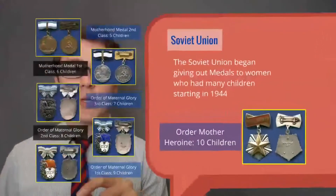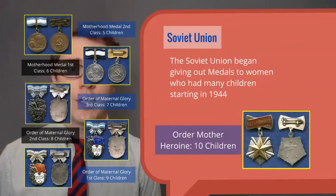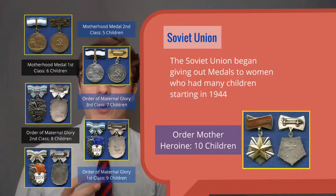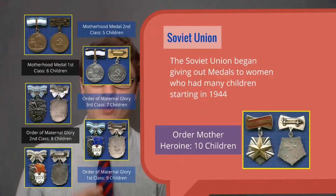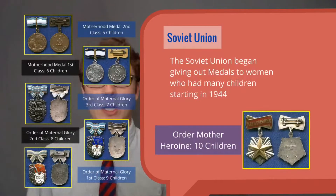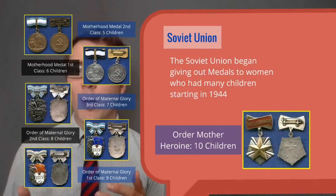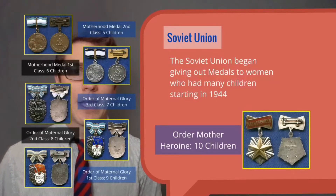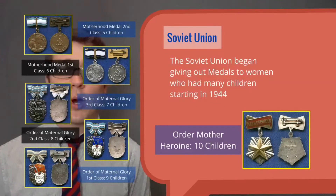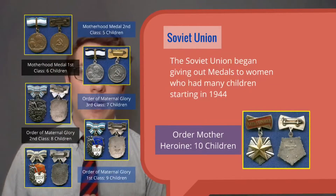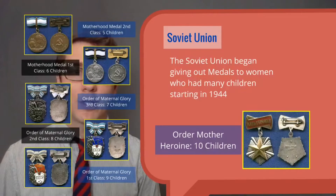Our first example is a country that no longer exists — the Soviet Union — which fell at the end of the Cold War and is now Russia. The Russians realized they had a problem with a lack of growth during the 1940s. So the Soviet Union started to take on different policies to encourage people. During World War II, at the heart of the war in 1944, they started awarding medals and ranks to women for having children.